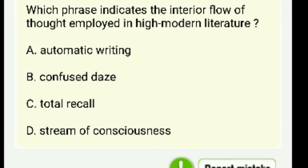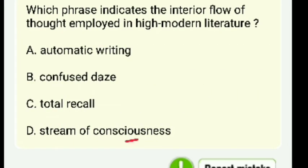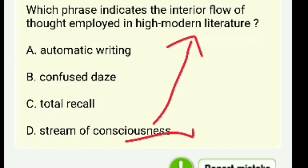Which phrase indicates the interior flow of thought employed in high modern literature — automatic writing, confused days, total recall, or stream of consciousness? The answer is stream of consciousness — defined as the interior flow of thought employed in high modern literature.